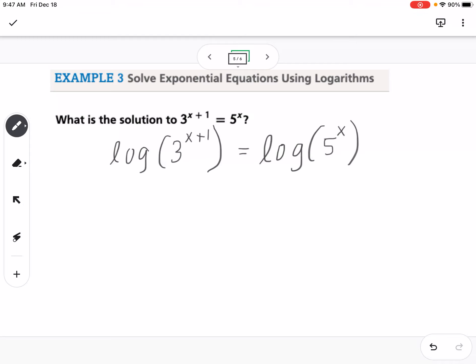Now using my properties of exponents, or properties of logs, I'm going to move the exponents out front. So this would become x plus 1 times log of 3, and this would be x times log of 5.